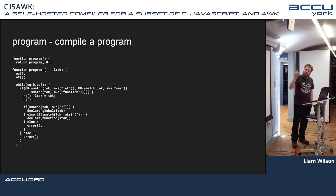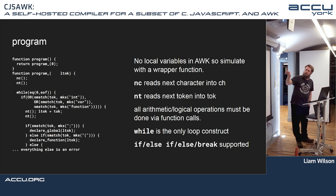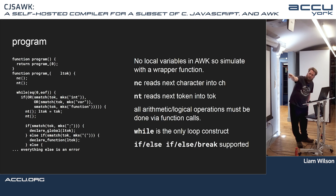The program function is the top-level function that actually compiles your program. Worth noting: since it's a subset of C that is also valid JavaScript and ORC, there are constraints — for example, there are no local variables in ORC, so you have to define a wrapper function. For the program function, we have a local variable called LTOC, but since we can't use local variables, we have a wrapper function that takes it as a dummy parameter.